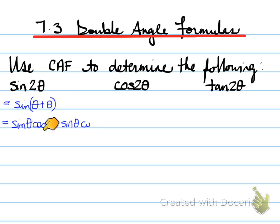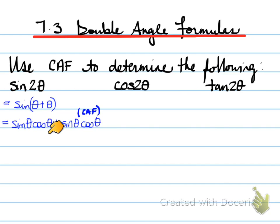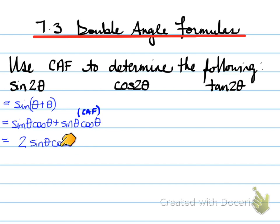Using the CALF rule, we get sine θ cos θ plus sine θ cos θ. What does that equal? Well, you have one sine θ cos θ plus another sine θ cos θ, which equals 2 sine θ cos θ. What you've now created is the DAF rule, and that is the answer: sine of 2θ is automatically equal to 2 sine θ cos θ.